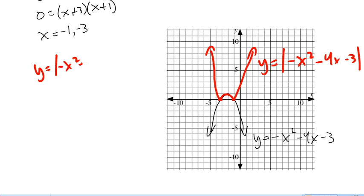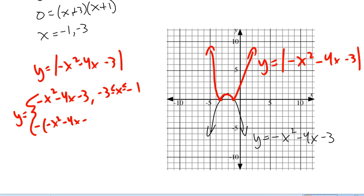So to write it in piecewise notation, we can see that for these x's in here, the red and the black graph are the same. So y will equal negative x-squared minus 4x minus 3 when our x's are between negative 3 and negative 1. And we'll include negative 3 and negative 1 in that. And then when they're the same as the negative, we'll have two places. We'll have negative 3 and less or negative 1 and up. So that's when x is less than negative 3 or greater than negative 1.